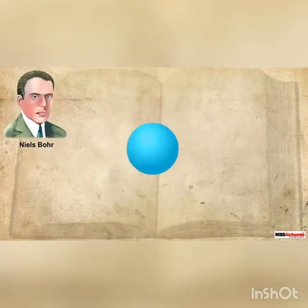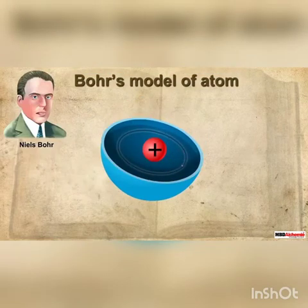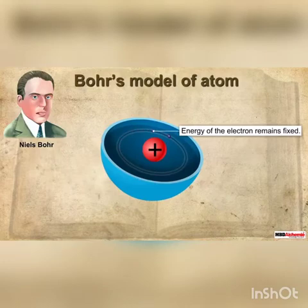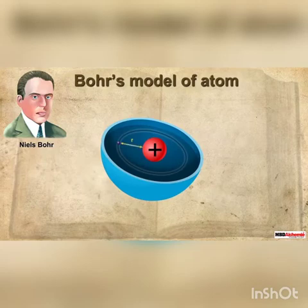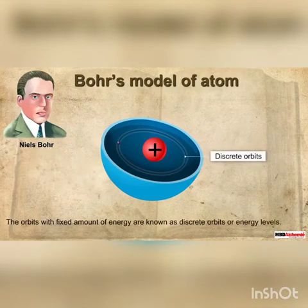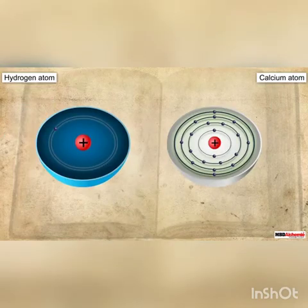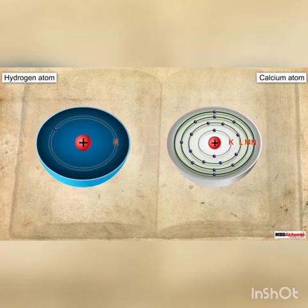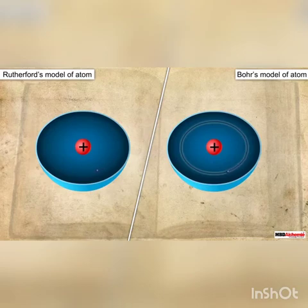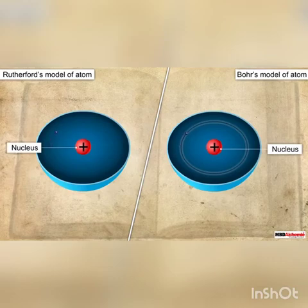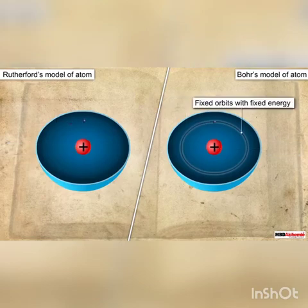Bohr said that electrons do revolve around the nucleus, but their energy remains fixed. He explained that the energy of electrons remains fixed because they are restricted to some fixed orbits. Each of these orbits is at a fixed distance from the nucleus and is associated with a fixed amount of energy. These orbits with fixed energy are known as discrete orbits or energy levels. These energy levels are represented by the letters K, L, M, N or the numbers 1, 2, 3, 4 starting from the center. In the Bohr model, electrons revolve around the nucleus in fixed orbits with fixed energy.